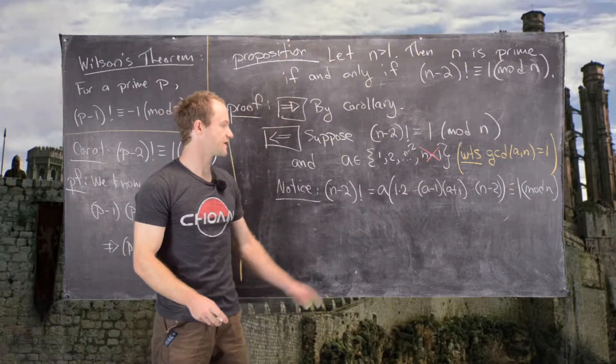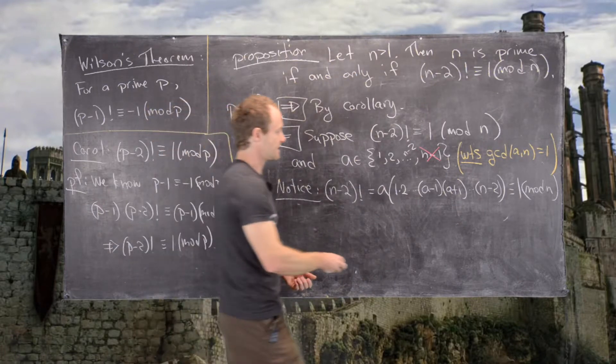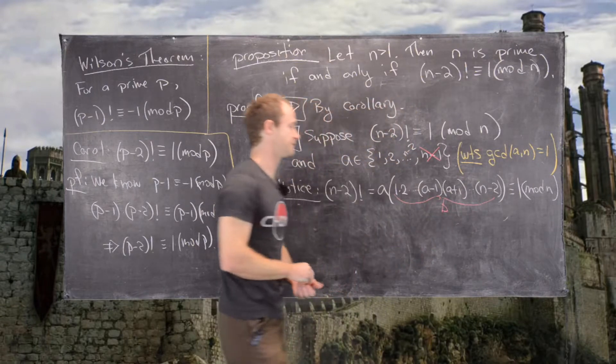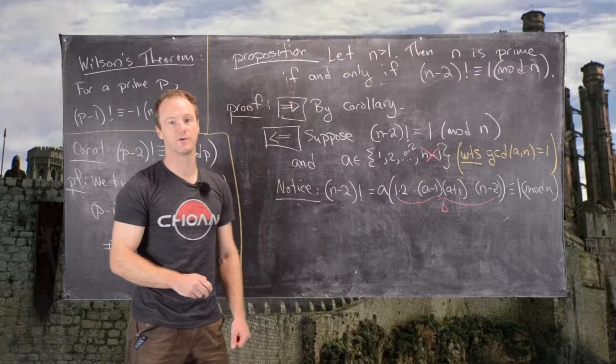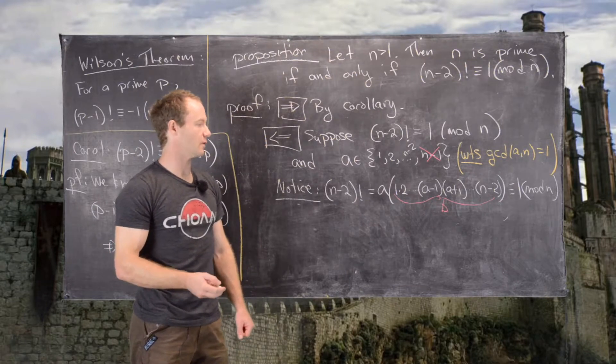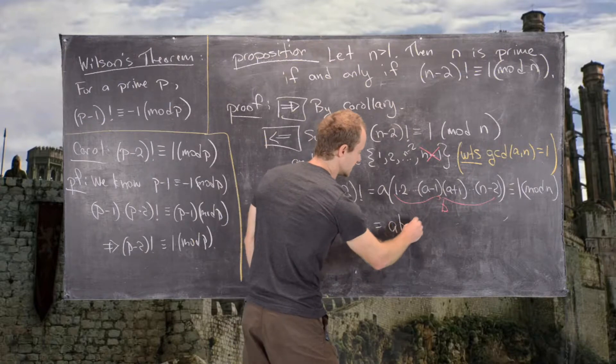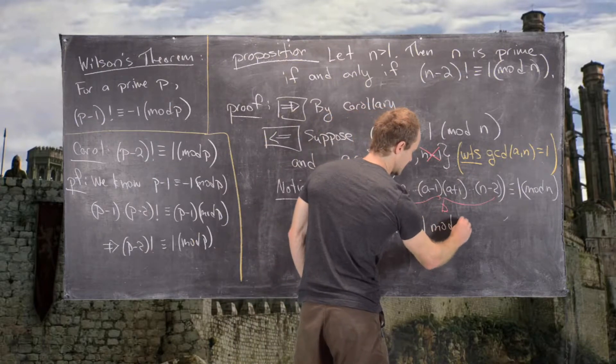In other words, we have found an inverse for a mod n. Let's say that this equals b. All the parts of the product except for a, if we multiply them by a, we get 1. So let's rewrite that. That means ab is congruent to 1 mod n.